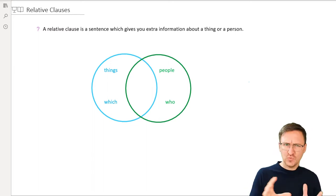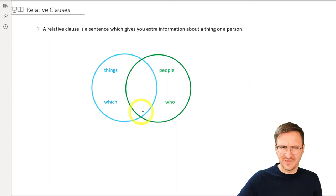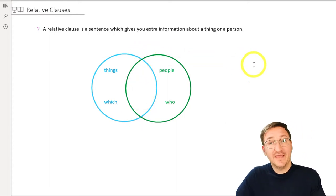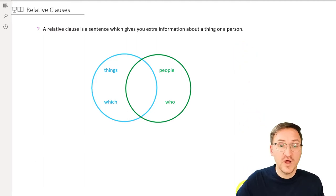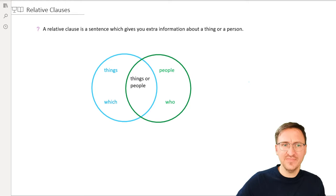And why do we have that part in the middle here? Okay. So, this is a bit special. It is also possible to use one relative pronoun for things and people. And that's the relative pronoun that. But be advised, typically, for people we prefer who.